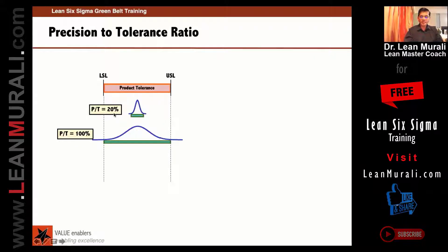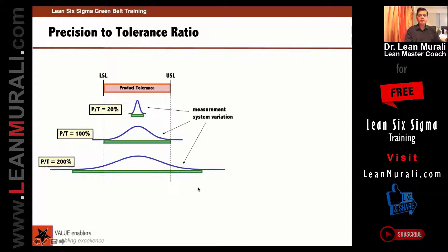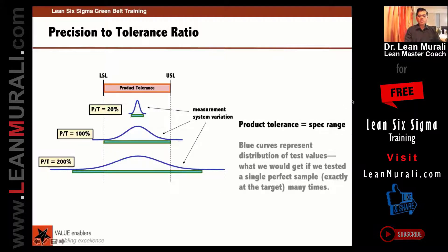We should keep the precision-to-tolerance ratio less than 10 percent. And if it is more, then there is no use of doing this. The product tolerance is the specification range.